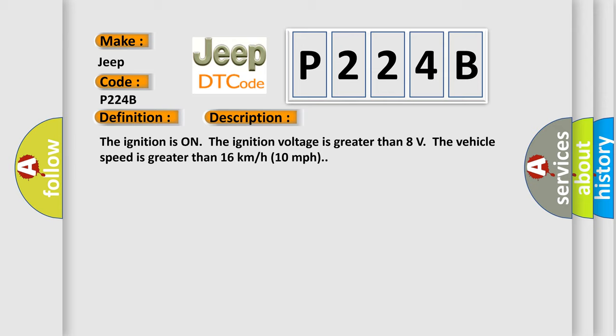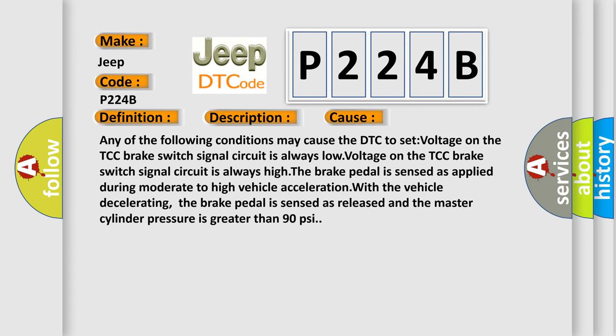This diagnostic error occurs most often in these cases. Any of the following conditions may cause the DTC to set: voltage on the TCC brake switch signal circuit is always low, voltage on the TCC brake switch signal circuit is always high. The brake pedal is sensed as applied during moderate to high vehicle acceleration. With the vehicle decelerating, the brake pedal is sensed as released and the master cylinder pressure is greater than 90 PSI.